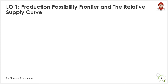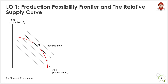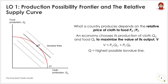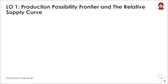We start with the first learning objective — the relationship between the production possibility frontier and the relative supply curve. For the purpose of our standard model, we assume that each country produces two goods, food and clothes, and that each country's production possibility frontier is a smooth curve, like that illustrated in this figure. What a country produces depends on the relative price of clothes to food. At given market prices, a market economy will choose production levels that maximize the value of its output. Therefore, the economy will produce at point Q, which is on the highest possible ISO value line.